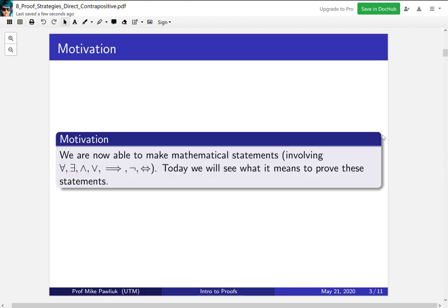Our motivation for today is we're at the point now where we can make mathematical statements and express ourselves mathematically, in particular using the symbols for all, there exists, and, or, implies, not, and if and only if. But now we want to see what does it mean to prove these types of statements. We can make them, but we want to actually check that they're true.